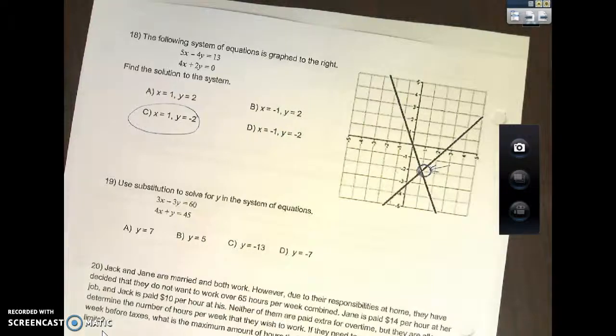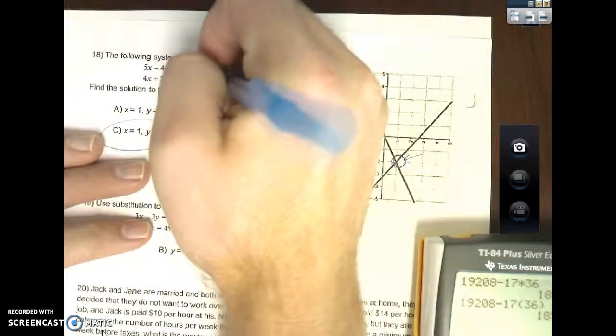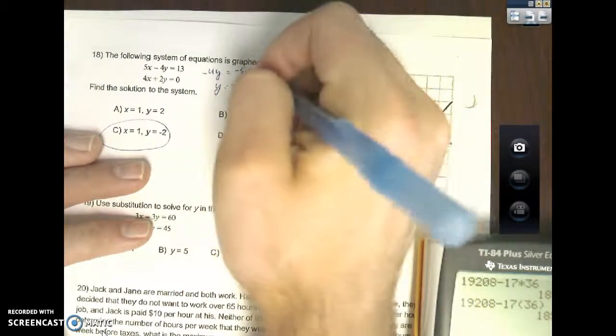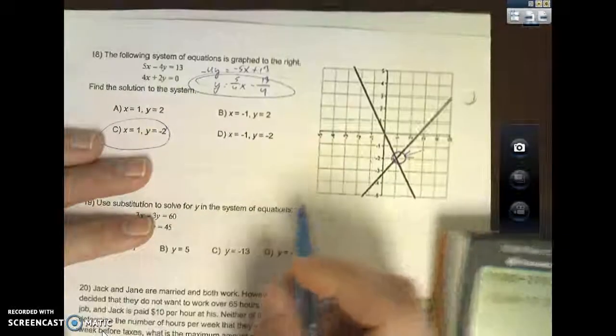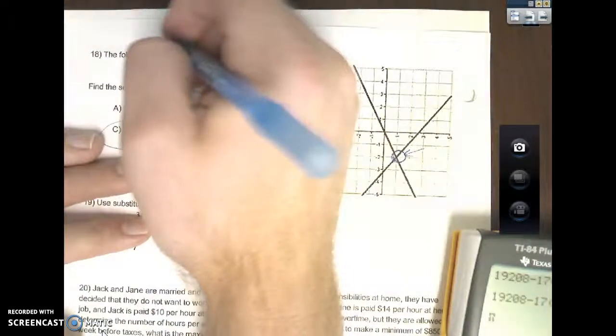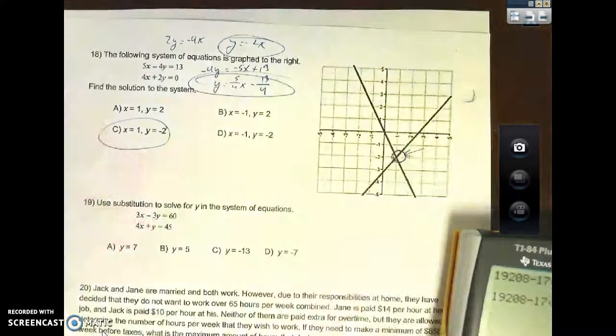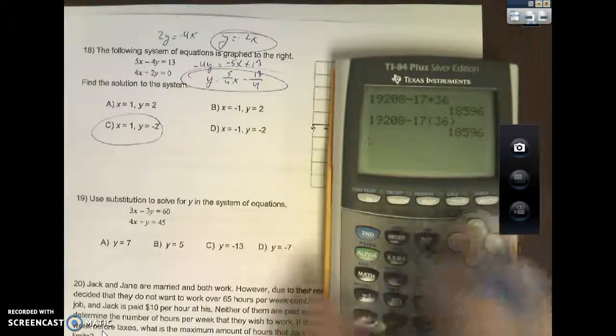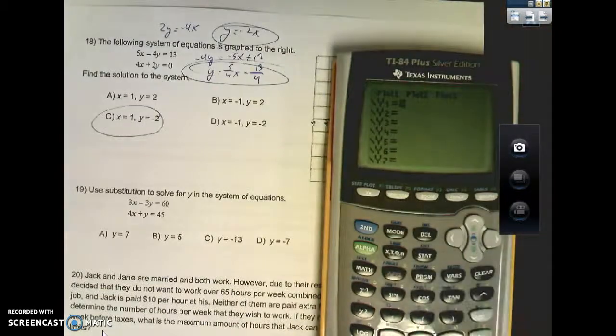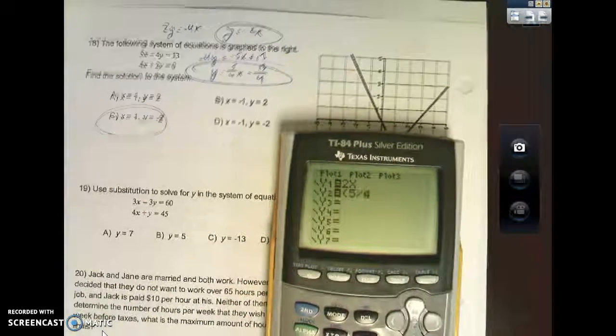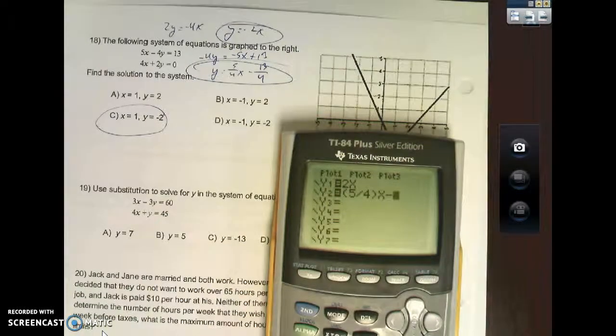Now one little quick trick I'd like to show you guys is get y by itself. So in the top equation, if I subtract 5x over, I get this. Divide by negative 4. There's my first equation, just getting y by itself. The second one, subtract 4x over, divide by 2. Those are my two equations.